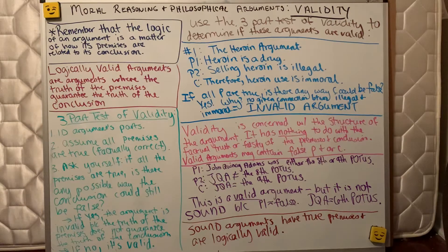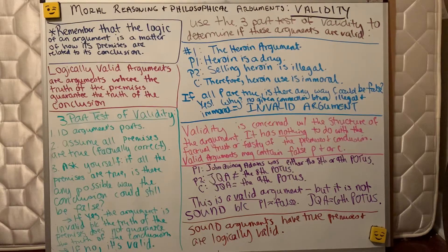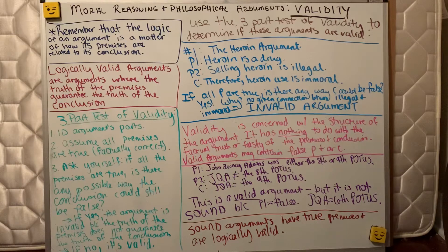For the sake of this test, where we're trying to determine if the argument has the proper structure — if it is a valid argument — we're going to assume all the premises are true, factually correct. Then we ask ourselves: if all the premises are true, is there still any possible way the conclusion could be false? If yes, the conclusion could still be false even with true premises, then the argument is invalid, because the truth of the conclusion is not guaranteed by the truth of the premises.